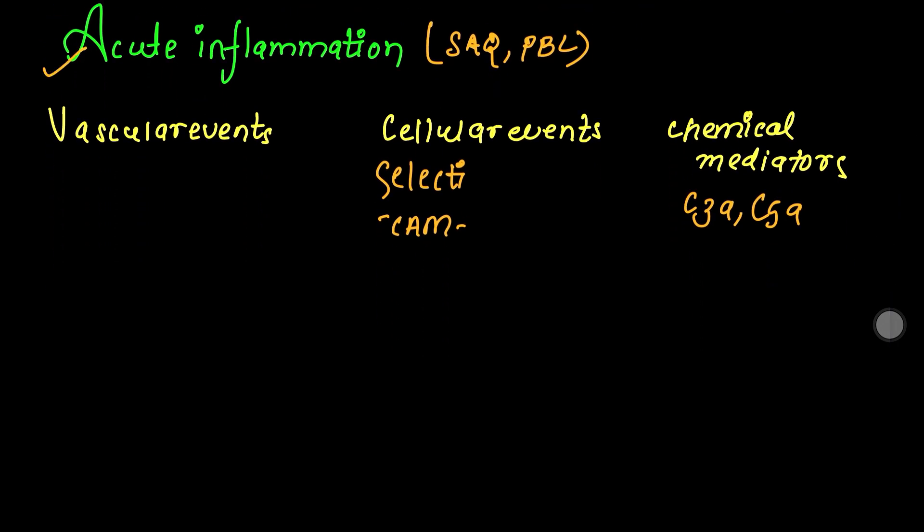Now we have a very important topic: acute inflammation, which is relevant for SAQ, PBL, and MCQs. It has three parts: vascular events, cellular events, and chemical mediators. These are all important topics that need thorough preparation for SAQ, PBL, and MCQ exams.